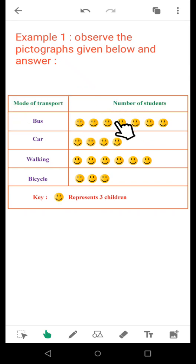That means 21 students prefer bus and only nine students prefer bicycle. So, most preferred mode of transport is bus, whereas the least preferred mode of transport is bicycle.